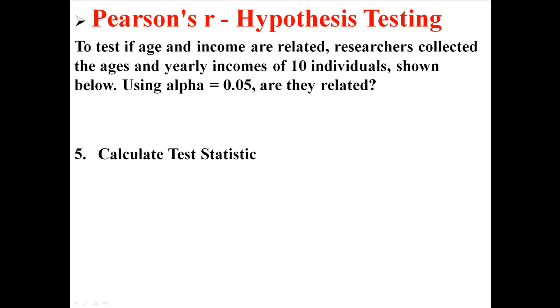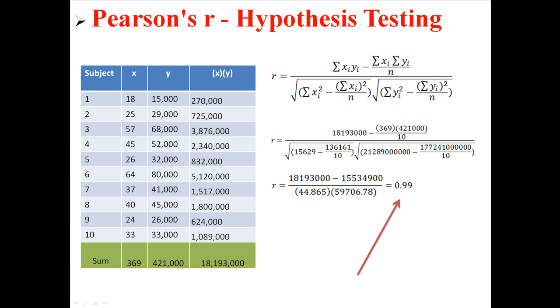Next we will calculate the test statistic. Now in my last example, I've already done this exact thing, so I don't want to go through it again. But here's everything that we did, and this is a process that we worked through in order to come up with our R of 0.99. So I'm going to go ahead with that. If you want to double check that, you can go back to the last lecture to see exactly how we got that.